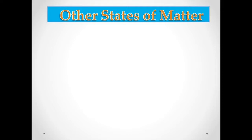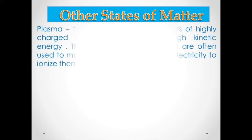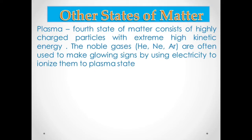Now let's discuss the other three states of matter aside from solid, liquid, and gas. The fourth state of matter is plasma. Plasma consists of highly charged particles with extremely high kinetic energy. It is not a common state of matter here on Earth, but it is very common in the universe — stars produce plasma, and our sun is actually a ball of plasma due to its extremely high temperature.